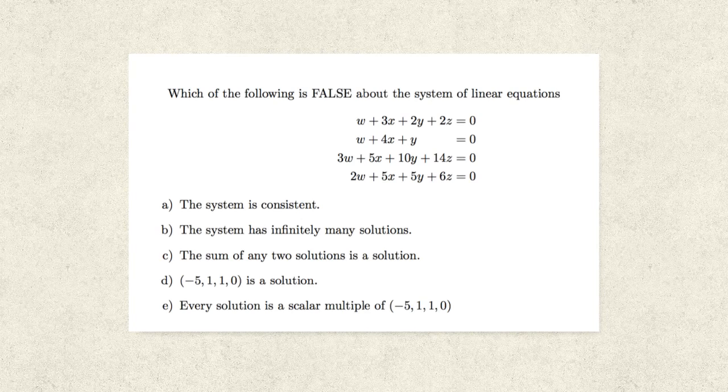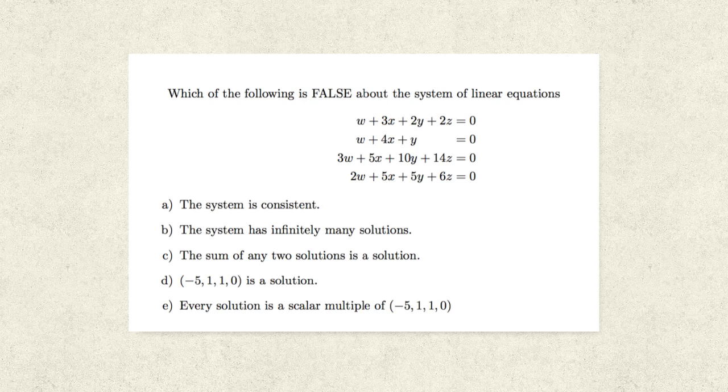Today's problem asks, which of the following is false about the system of linear equations given in the picture? A, the system is consistent. B, the system has infinitely many solutions. C, the sum of any two solutions is a solution. D, negative 5, 1, 1, 0 is a solution. And E, every solution is a scalar multiple of negative 5, 1, 1, 0.